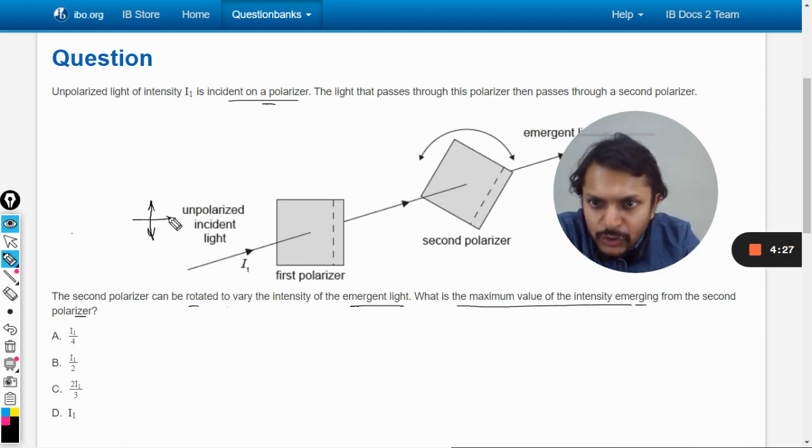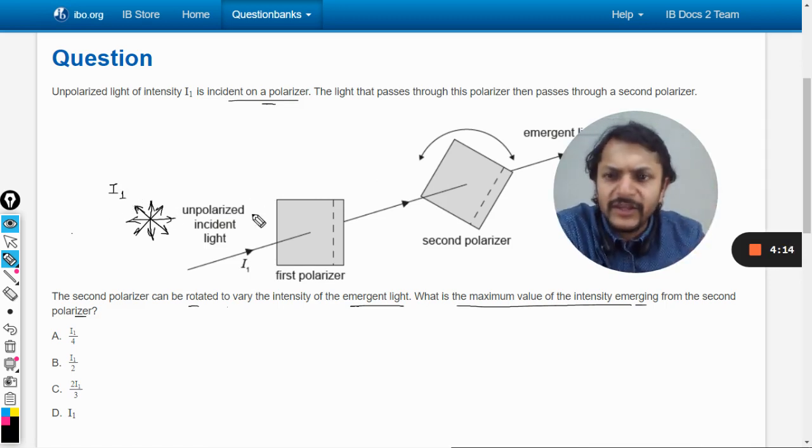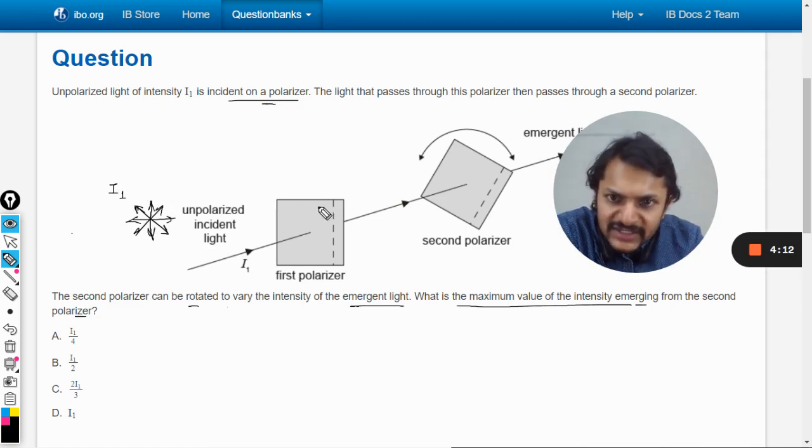If the intensity here is I₀, it becomes I₀ by 2 after the first polarizer. In this case they have taken it to be I₁—these are just symbols, don't worry. When it passes through the first polarizer, the intensity here, I'm calling it I₂.